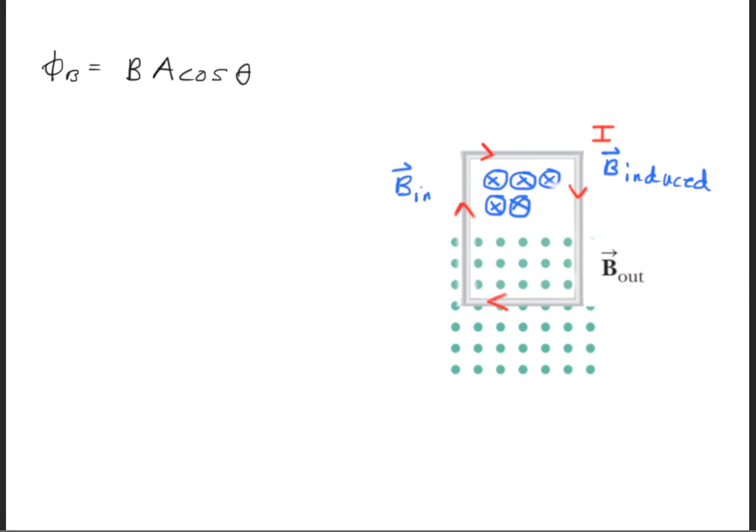Next, we'll bring up the magnetic flux equation. The magnetic flux is equal to the magnetic field times the area times the cosine of the angle between the magnetic field and the surface normal. The area in this system is the length of the wire times the width of the wire. The angle between the magnetic field and the surface normal will be 0 degrees.